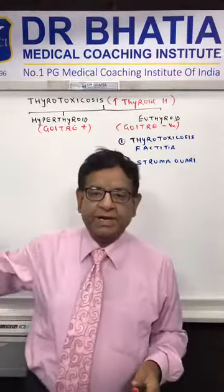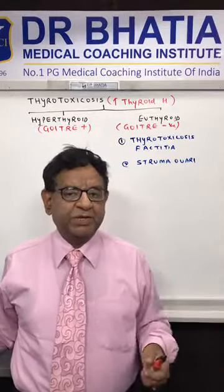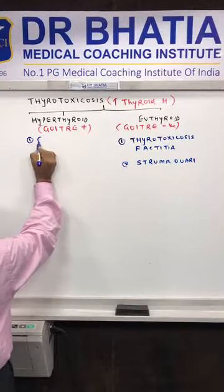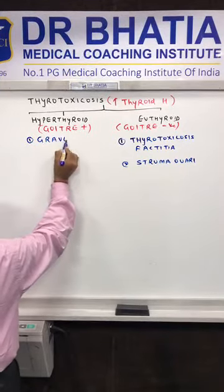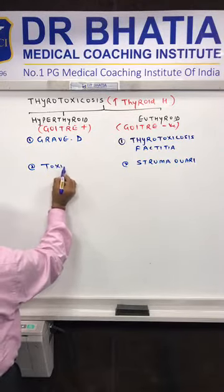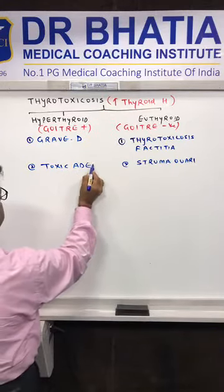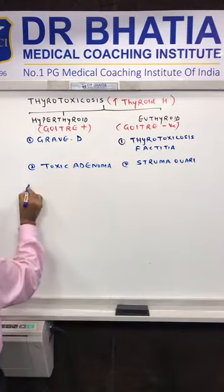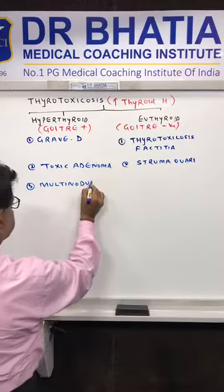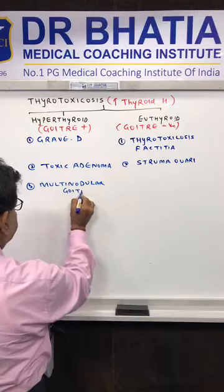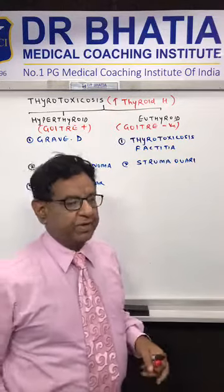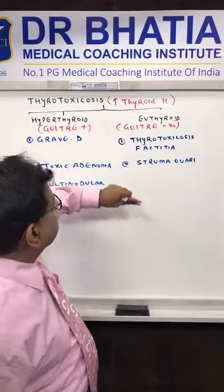Regarding hyperthyroid, the causes are: Graves' disease, toxic adenoma, and multinodular goiter. Having learned these basic fundamentals, we will now take them one by one.